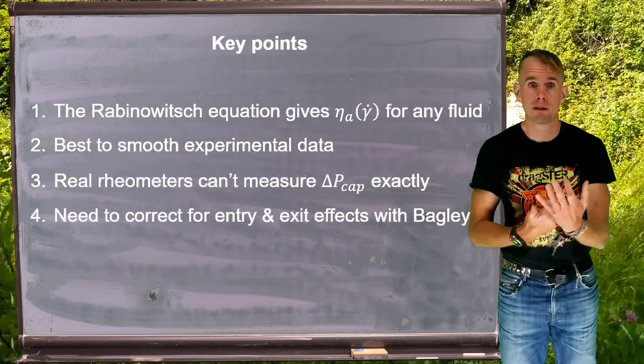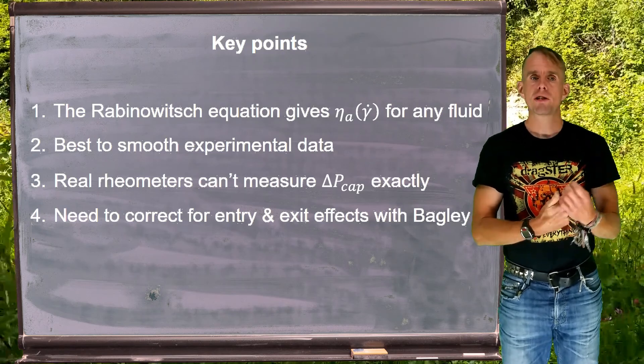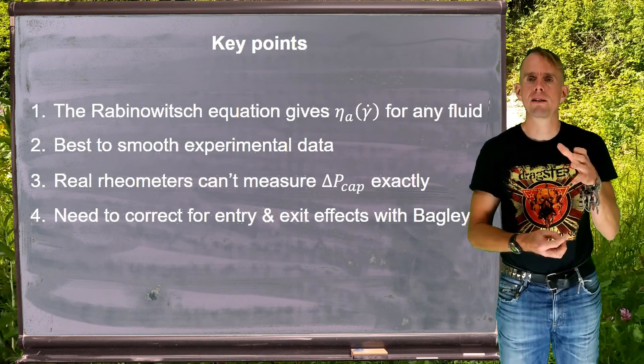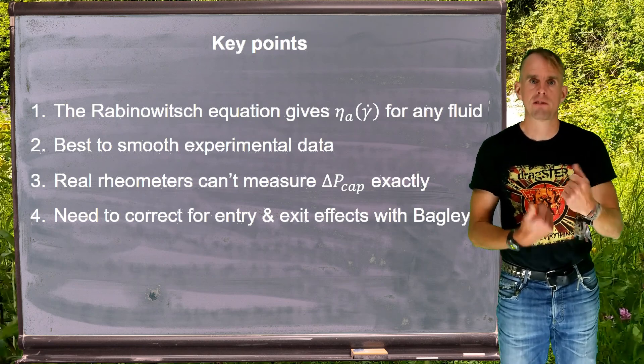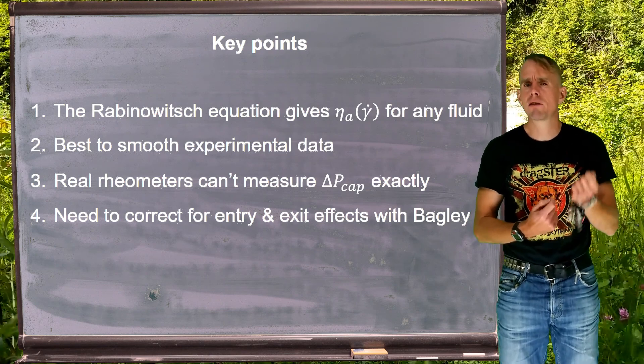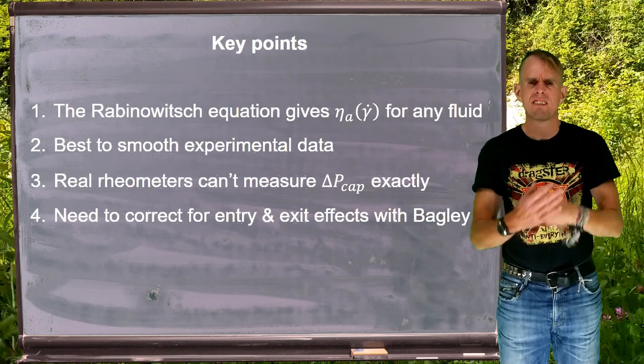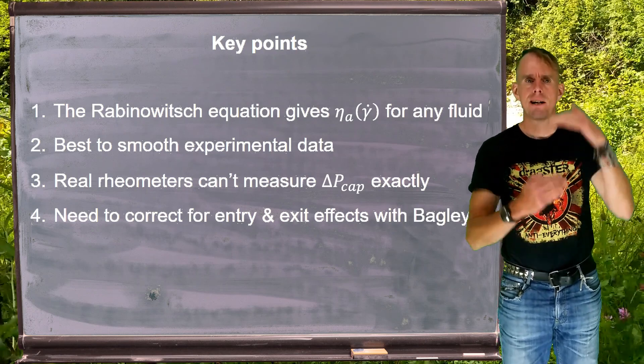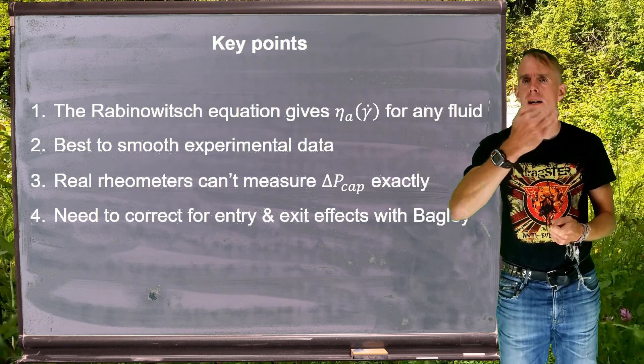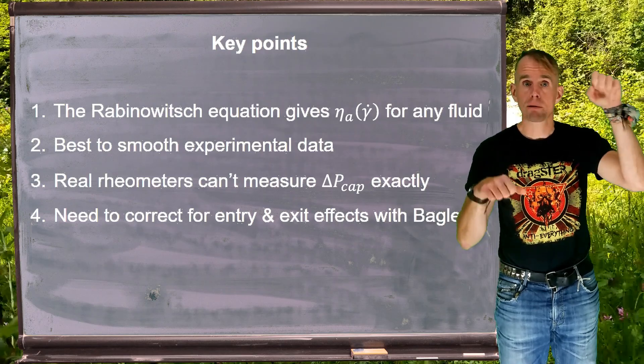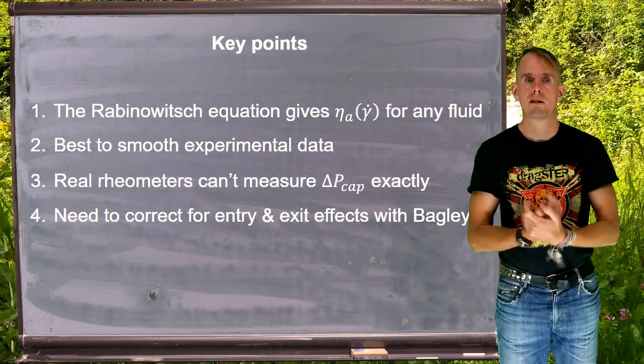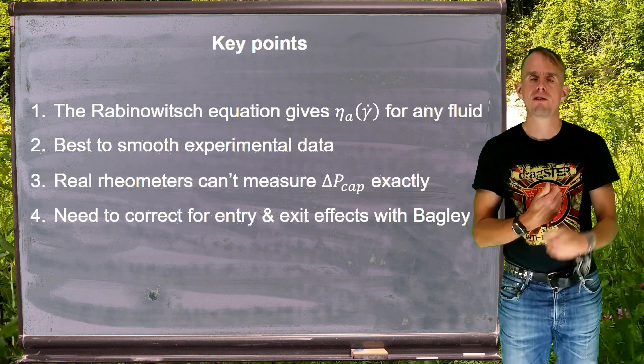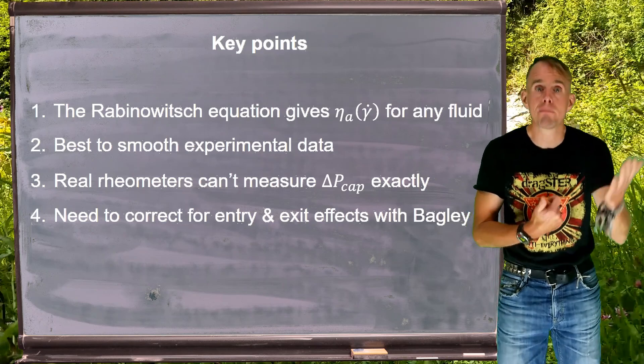Let's recap a couple of key points. We've looked at the Rabinowitsch equation, which gives us η_a(γ̇) for any arbitrary fluid. And it's these apparent viscosity data to which we can then fit a generalized Newtonian expression or viscoelastic expression. It's best to smooth the experimental data because it gets rid of any hiccups. We reminded ourselves that real capillary rheometers cannot measure the capillary pressure drop exactly. There's going to be contributions from entry and exit pressure drops. We've seen how to correct for this entry and exit pressure contribution with Bagley correction, which is essentially doing a number of experiments with a number of different capillary aspect ratios at a number of different volumetric flow rates.